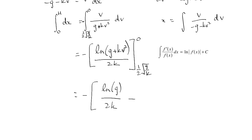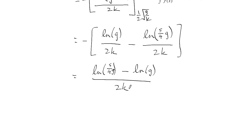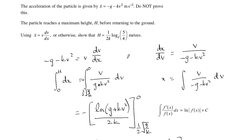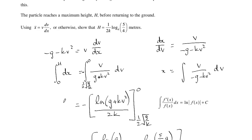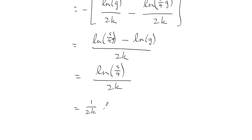Putting this all over 2k and applying the sign, we get (1/(2k))[ln(g) − ln(5g/4)], which by log laws equals (1/(2k)) ln(g / (5g/4)) = (1/(2k)) ln(4/5) — since the g's cancel, giving ln(4/5). And that equals h. If you want to write it in the same format as the marking guide, ln is the same as log base e.